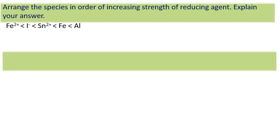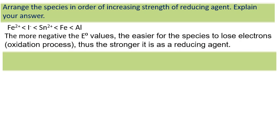We can conclude that Fe2+ is the smallest compared to aluminum as a reducing agent. The more negative the E° values, the easier for the species to lose electrons which undergo oxidation process. Thus, the stronger it is as a reducing agent.